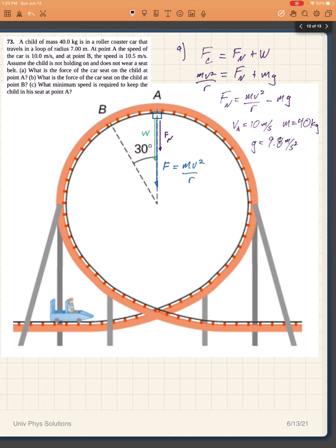And the radius of circumference, the radius is 7 meters, the radius of the loop.